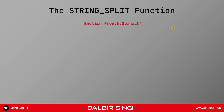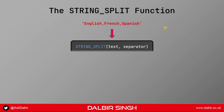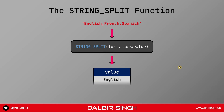So let's see how the string split function works. Here's our language string. We feed this into the string split function which takes two arguments: text and separator. The text being the language string we have here and the separator is essentially the delimiter, which will be a comma. The output of this function is a table result which contains just one column called value and all the individual elements.